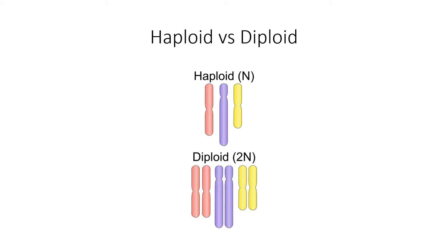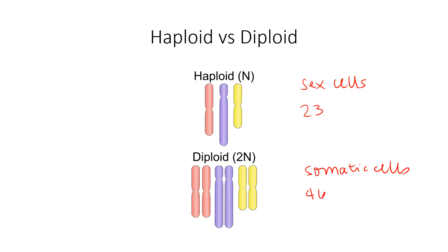Diploid and haploid has to do with the number of chromosomes found in a cell. The only cells in the human body that are haploid — meaning having half the normal number of chromosomes — are sex cells, such as egg and sperm. The haploid number in a human being is 23 chromosomes. That's because during fertilization, an egg with 23 chromosomes will join with a sperm with 23 chromosomes, giving us a diploid cell called a zygote. The rest of the cells in the human body are considered to be diploid. That means pretty much everything else falls into the somatic cell category, and these cells all have 46 total chromosomes.